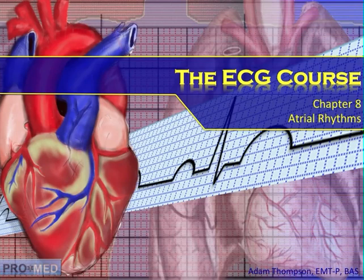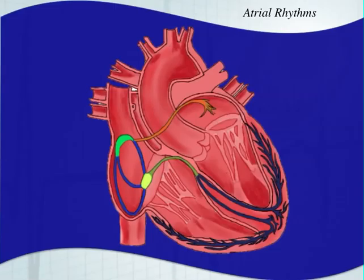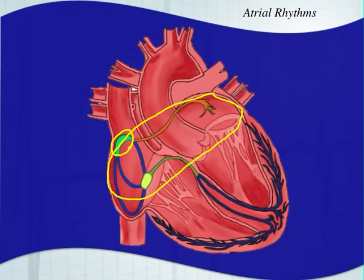Hello and welcome back to the ECG course. This is chapter 8. In this chapter we're going to talk about atrial rhythms. In the first chapter we talked about sinus rhythms which originate from the SA node. In this chapter we're talking about atrial rhythms which originate from anywhere in the right or left atrium, except for those rhythms that originate in the SA node.